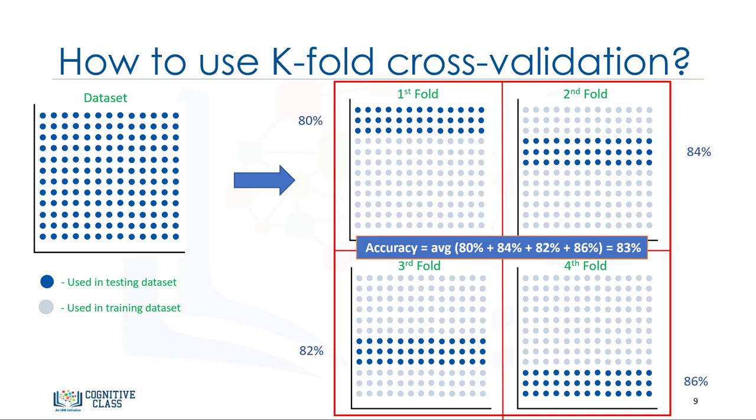K-fold cross-validation in its simplest form performs multiple trained test splits using the same data set where each split is different. Then, the result is averaged to produce a more consistent out-of-sample accuracy. We wanted to show you an evaluation model that addressed some of the issues we've described in the previous approaches. However, going in-depth with k-fold cross-validation model is out of the scope for this course. Thanks for watching.